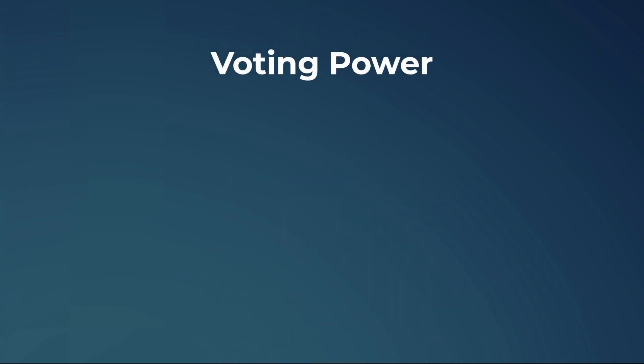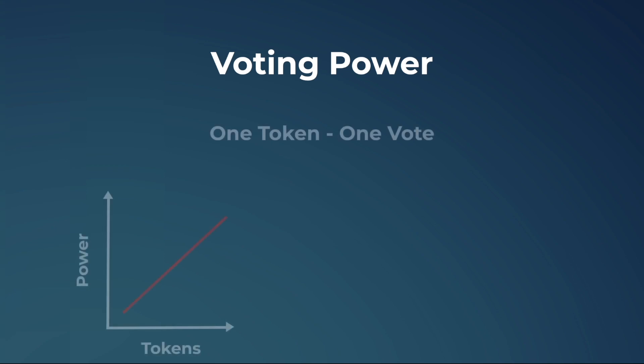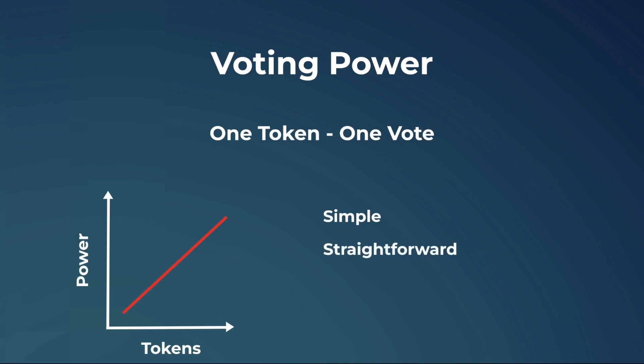Finally, let's delve into the question of how much power a governance token holder actually possesses. In the most simple scenarios, one governance token will equal one vote. Although this procedure is simple and straightforward, it will cause the project to be vulnerable to investors with large purses taking advantage of their substantial voting power and steering the project into their desired direction, much like in a centralized governance model.